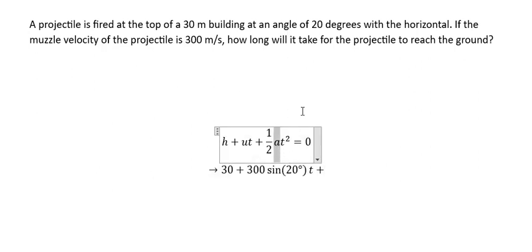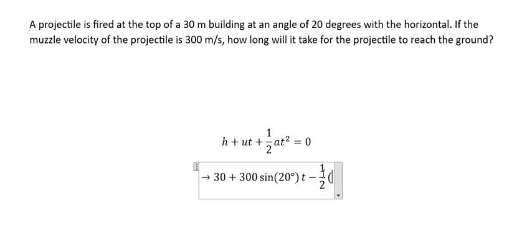We know that a is the acceleration due to gravity, but the projectile will go down, so that means we have negative g, which is negative 9.8, and we have t squared.